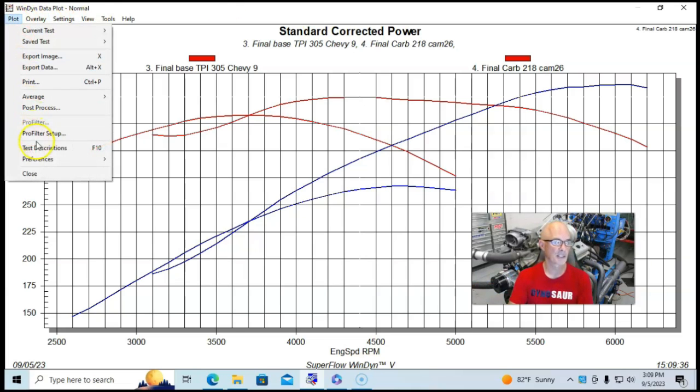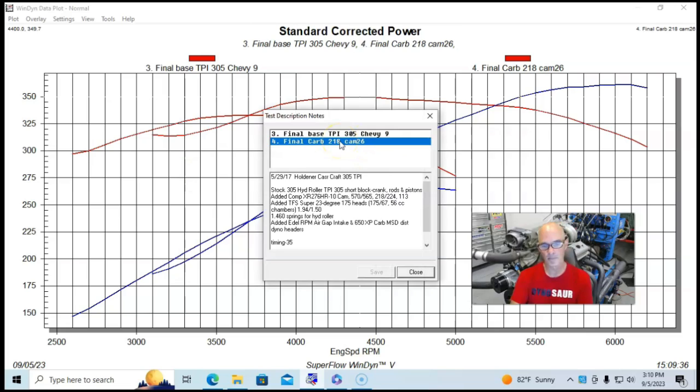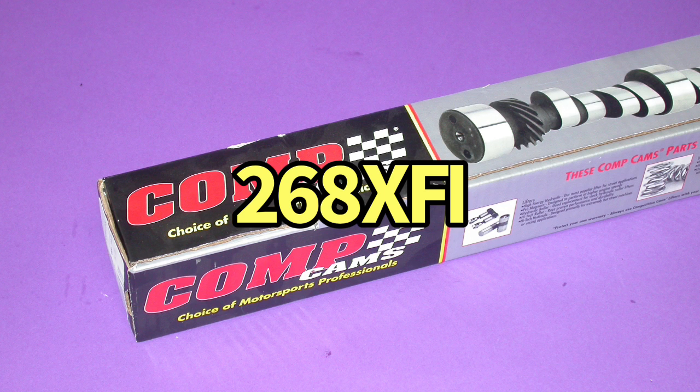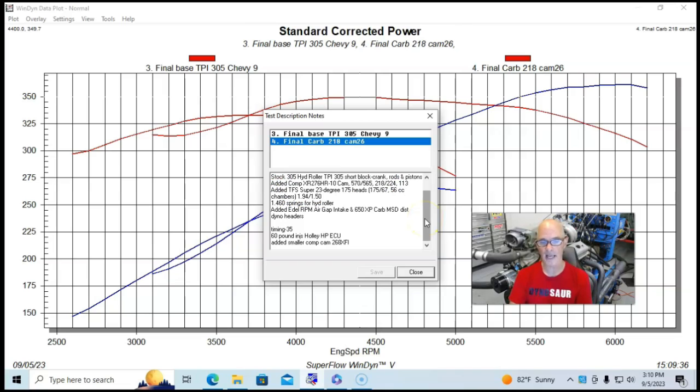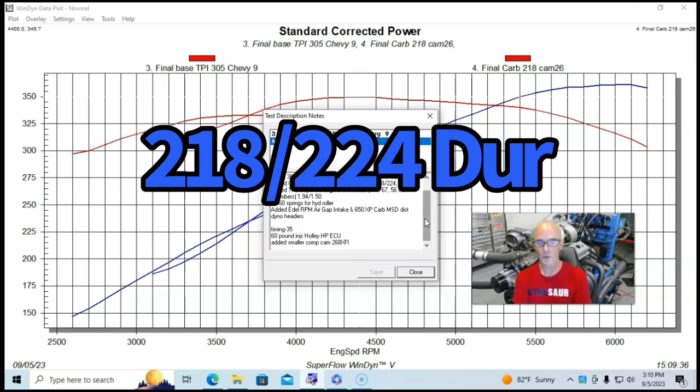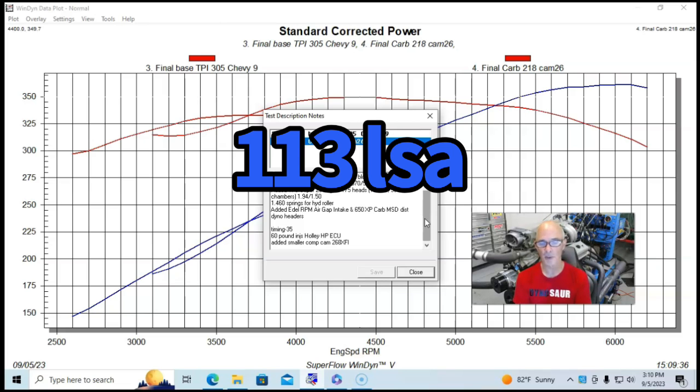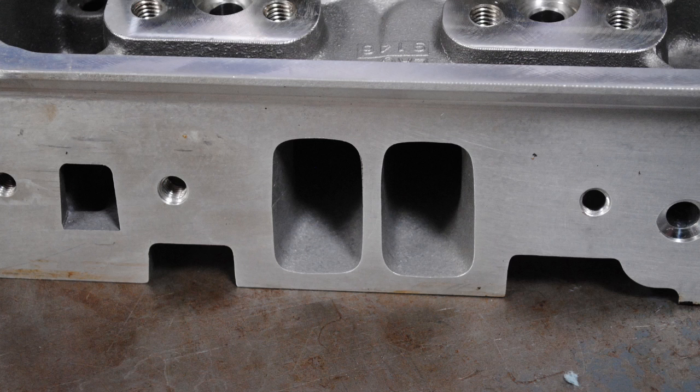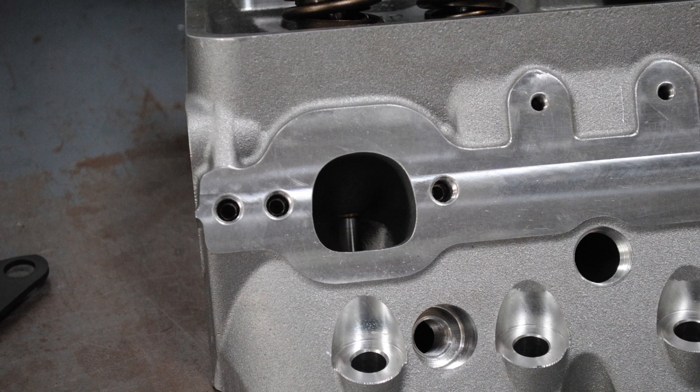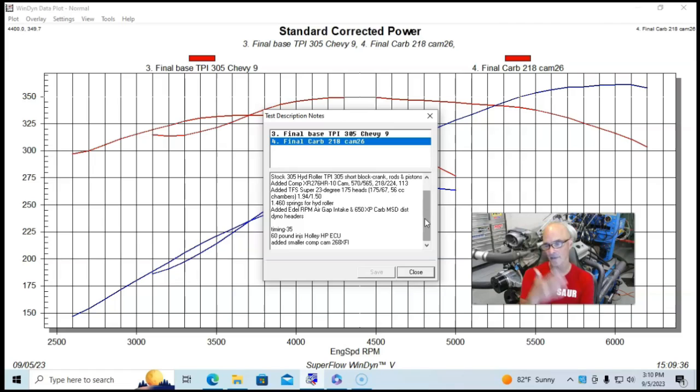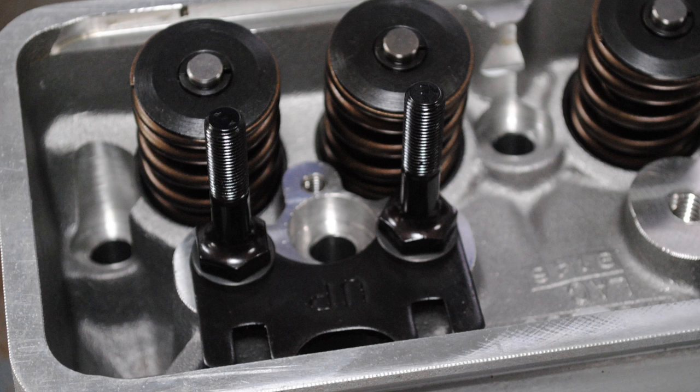So let's take a look at our test description here. We added a different camshaft to start out with, we replaced the factory cam with a 268 XFI cam from Comp Cams, it was a 570-565 lift split, a 218-224 degree duration split, and a 113 degree lobe separation angle. We also installed a set of TFS Super 23 175 heads, 175 cc intake ports, 67 cc exhaust ports, 56 cc combustion chambers, they had a 194-150 valve combination.